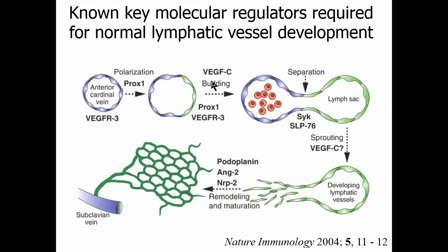Eventually this recreates a lymphatic endothelial cell type that will be able to be separated as a lymph sac under the influence of other molecular species. This nascent lymph sac then, through the additional action of VEGF-C and many other molecular regulators, will eventually become a developing lymphatic vasculature, further modulated and remodeled through the actions of podoplanin, angiopoietins, and neuropilins, eventually ending up with the mature lymphatic vasculature that will drain into the subclavian vein.